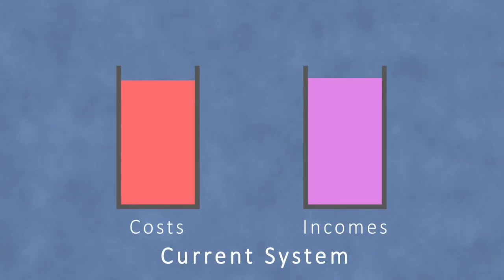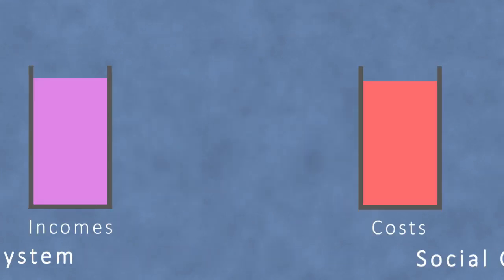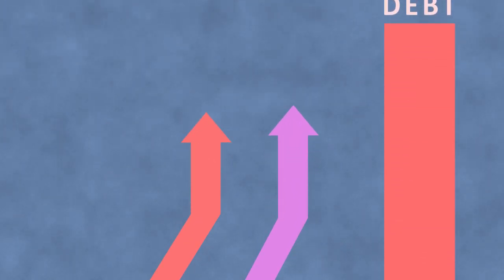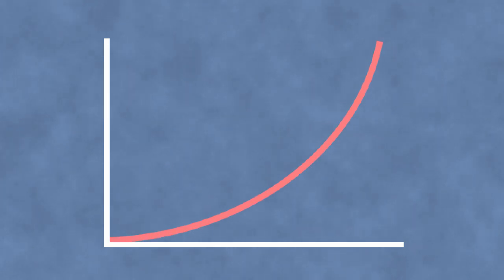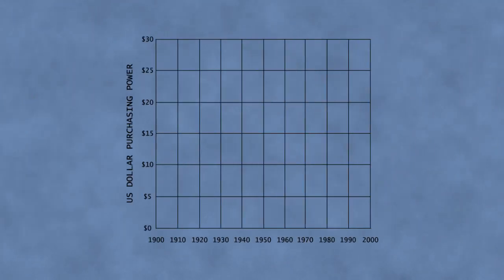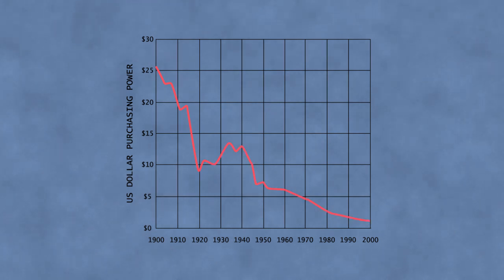The present economic system makes use of the first course of action — filling the gap with additional debt money. Social credit recommends the second. Filling the gap with additional debt money transfers and does not liquidate costs. It therefore leaves an ever-increasing residue of debt that must be repaid out of future economic activity. This makes equilibrium dependent on continuous growth, whether it is physically needed or not, and the creation of new jobs, whether genuinely useful or not, to distribute incomes. It is also the primary driver of constant inflation — the steadily diminishing buying power of each unit of currency.